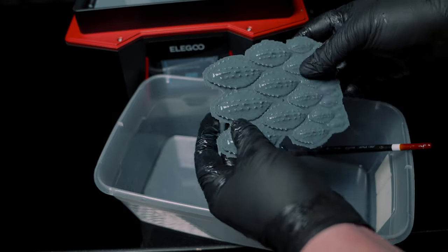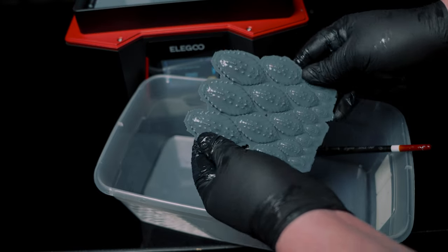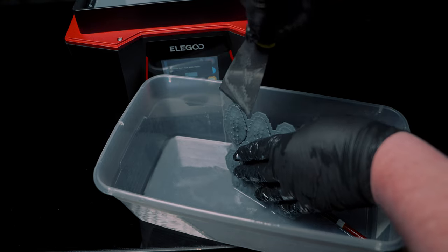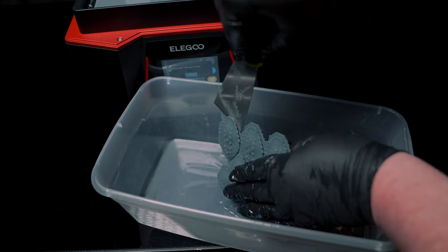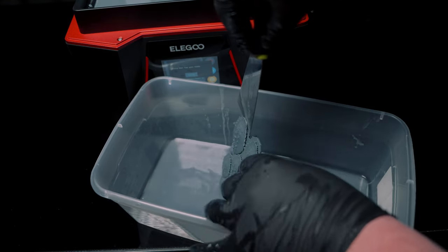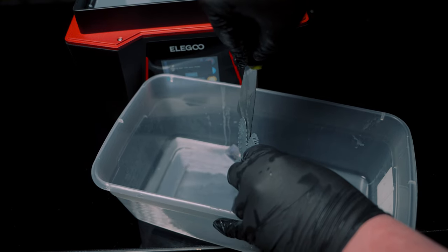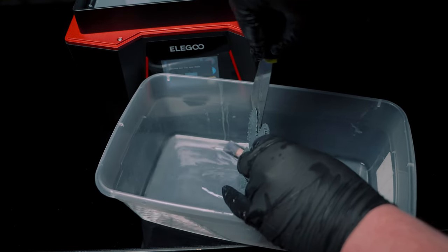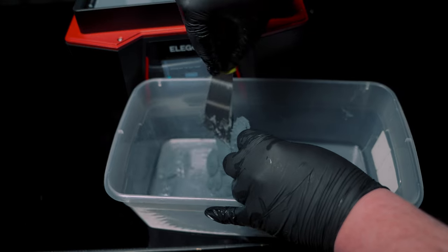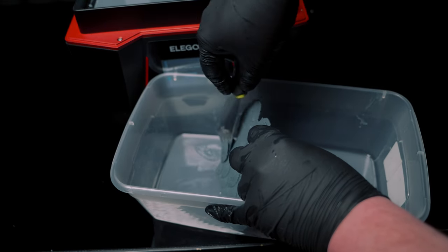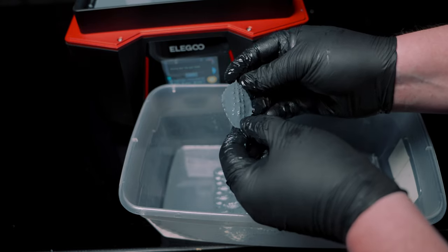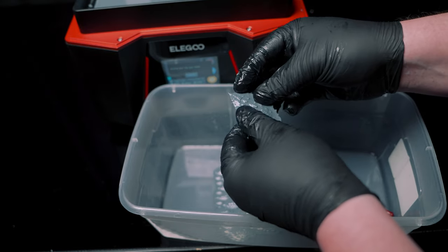The first print turned out okay, but I did make a few mistakes. For one, I thought printing these horizontally would be a good way to speed up the print, but I must have messed up some of the settings because some of them welded to the support raft. It also didn't pick up the full range of detail either, which I assume is also related to the print settings.